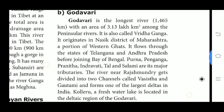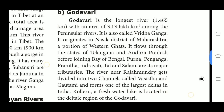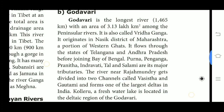The Godavari is joined by a number of tributaries such as Purna, Penganga, Pranhita, Indravati, Tel and Sabari. The river near Rajahmundry gets divided into two channels called Vasishta and Gautami. Kolleru Lake is also situated in the Godavari delta region.